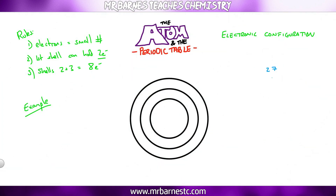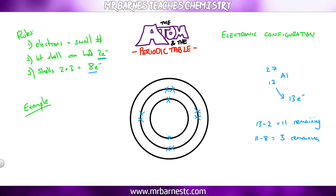Looking at aluminium: it has 13 electrons — that's the small number. Two go on the first shell, leaving 11. The second shell holds 8, so I put 8 in there. 11 take away 8 leaves 3 remaining, and they go on the third shell. So the written electronic configuration for aluminium would be 2.8.3.